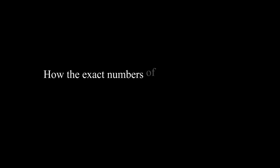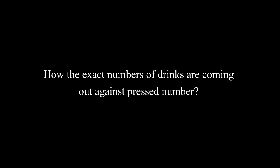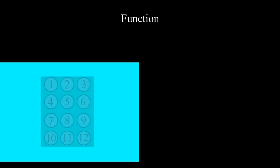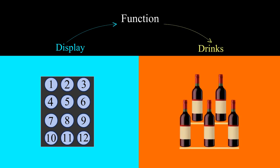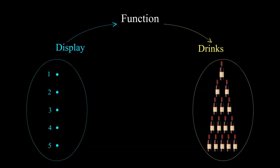What is happening inside? How the exact number of drinks are coming out against the pressed number? Basically this vending machine is programmed to work as a function in which input is displayed in the front part and output is the corresponding number of drinks coming out.